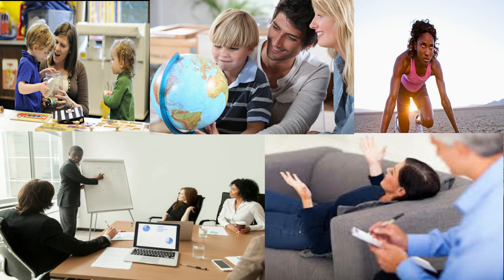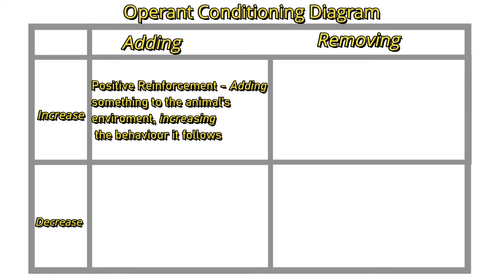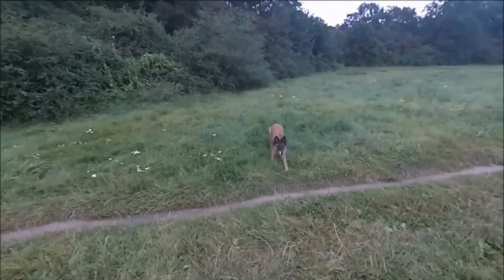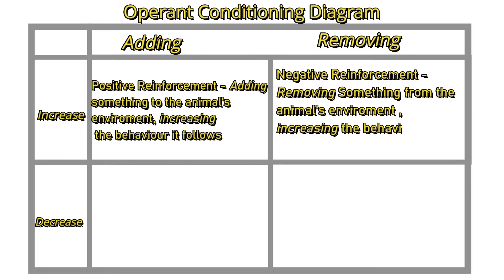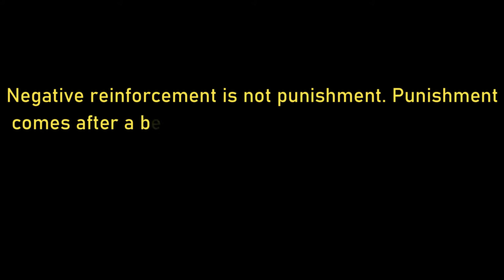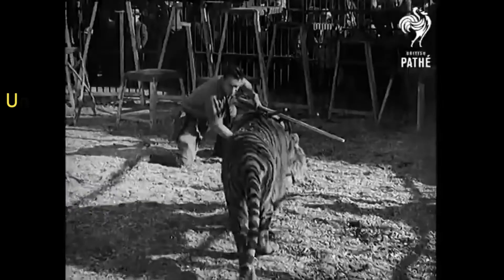Skinner popularized four quadrants of learning, which together are called operant conditioning. Positive reinforcement is adding something to the animal's environment, increasing the behavior it follows — for example, giving a tasty treat to a dog as a reward for a correct behavior. Negative reinforcement is removing something from the animal's environment, increasing the behavior it follows — for example, you put on your seatbelt to stop that horrible beeping sound.